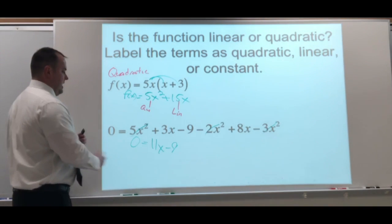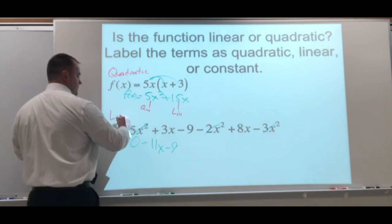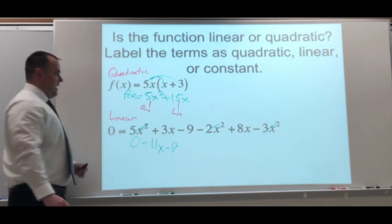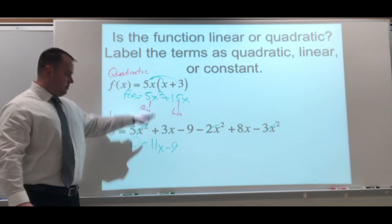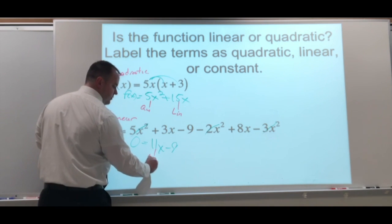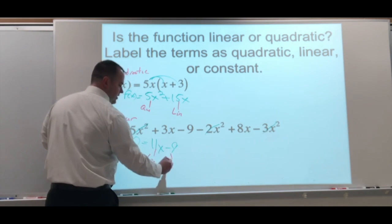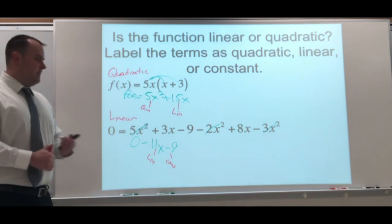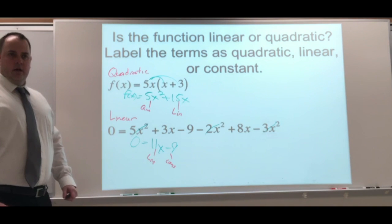And there is no quadratic term because there's no square like in the one above. So this is going to be our linear term. It has the x with it. And this is going to be our constant. Again, no variable with that constant. The 9 is just going to stay a 9.